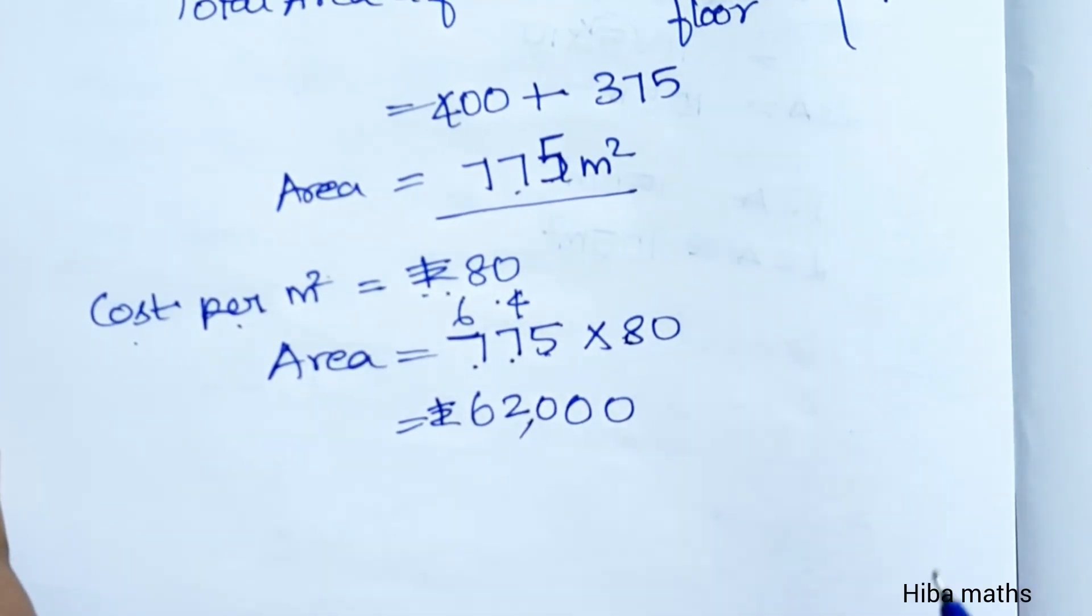For 62,000 rupees you can renovate the floor and the walls. Thank you so much for watching.